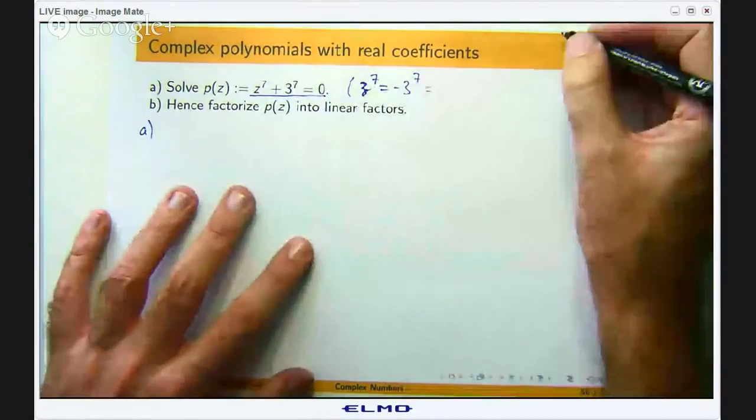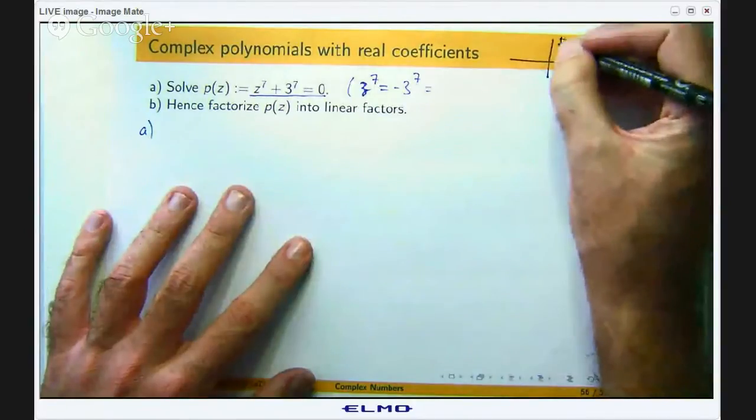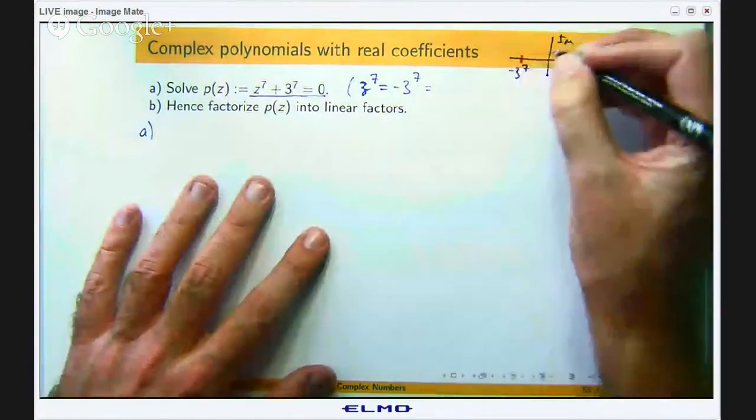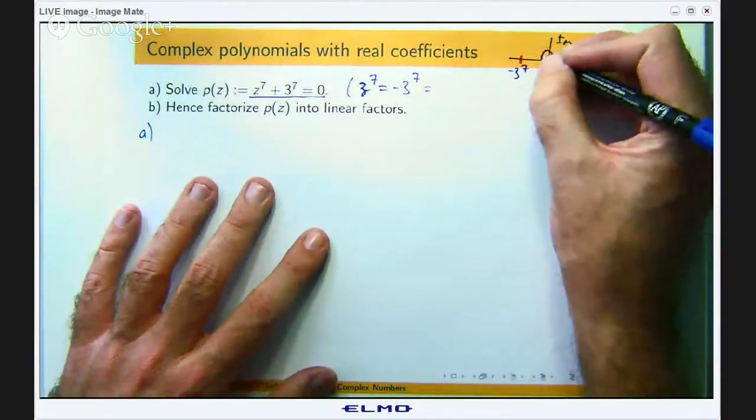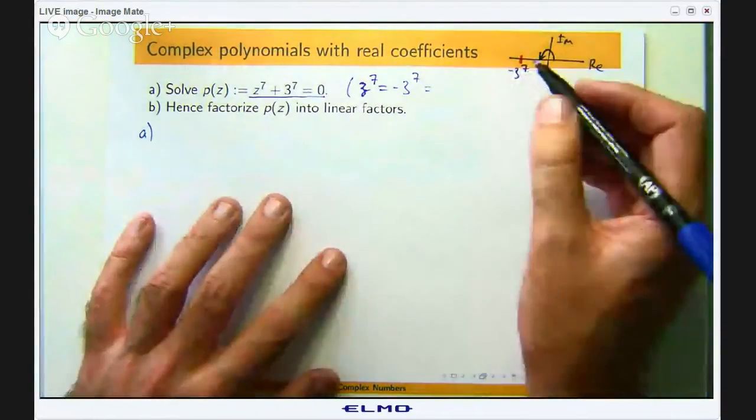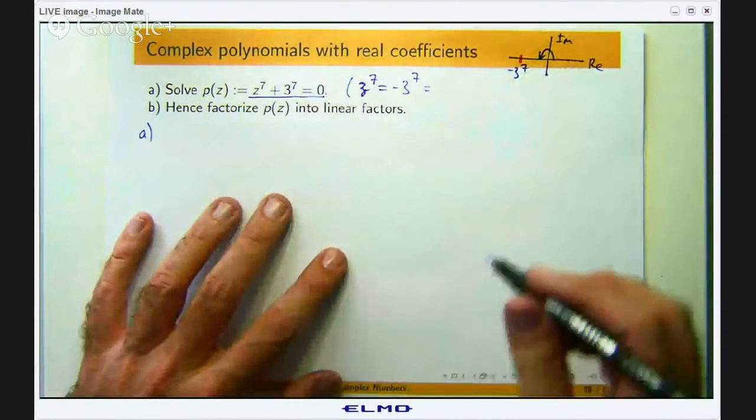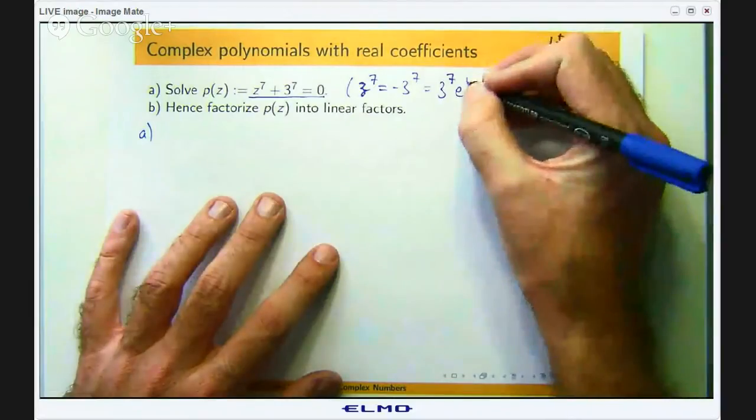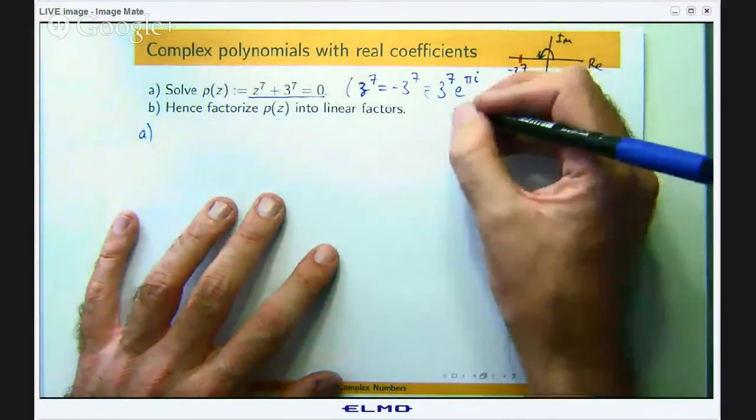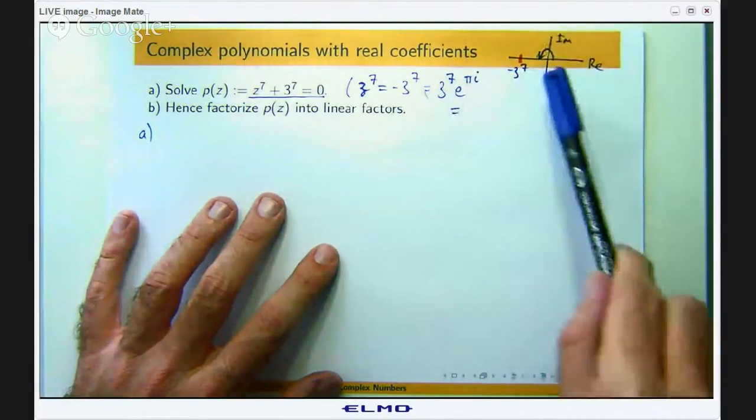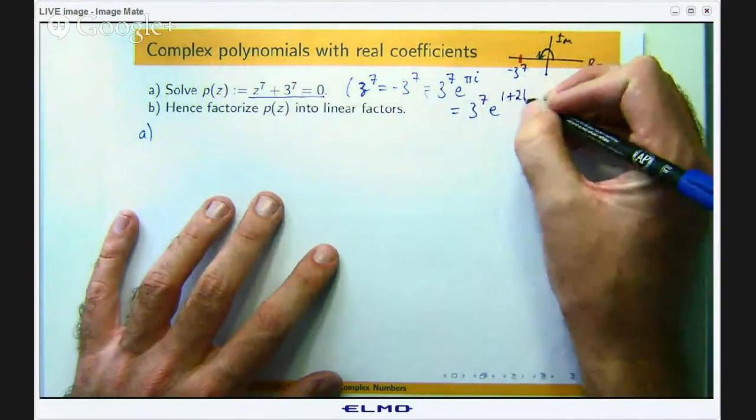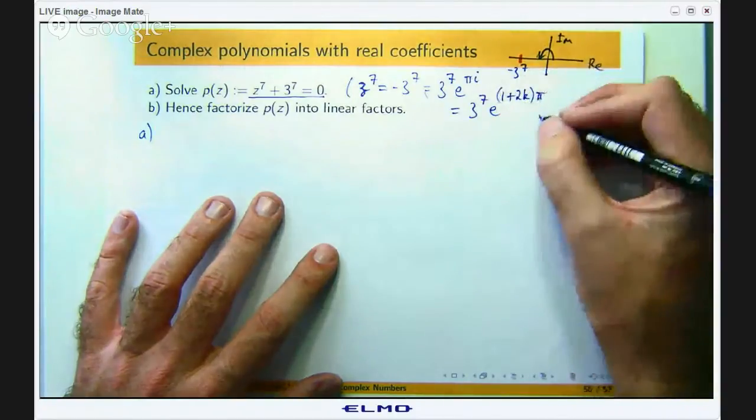So if I sort of draw a little rough sketch in the complex plane, negative 3 to the 7 will lie on the real axis. So it is 3 to the 7 units away from the origin and to get over there you do a half revolution. So in terms of polar exponential forms you have got a length times e to the angle times i. So here it is half a turn so it will be πi and these sort of representations are not unique. So what we are going to do you can keep spinning around and around by one revolution to get back to the same point.